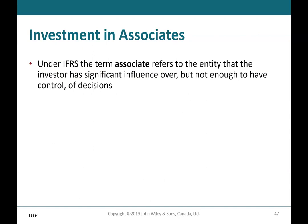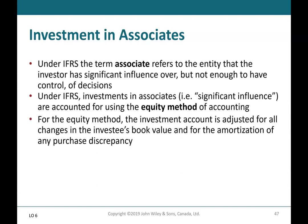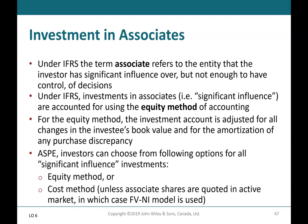Under IFRS, the term associate refers to the entity that the investor has significant influence over but not enough control to direct decisions. Investments in associates — i.e., significant influence — are accounted for using the equity method of accounting. Under the equity method, the investment account is adjusted for all changes in the investee's book value and for the amortization of any purchase discrepancy. Under ASPE, investors can choose the equity method or the cost method, unless the associate shares are quoted in an active market, in which case the fair value through net income model is used.